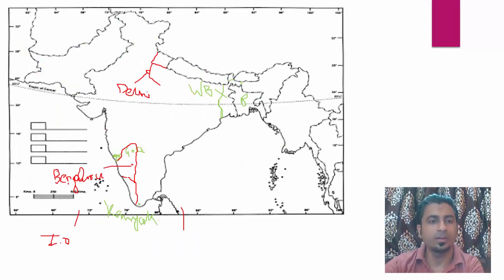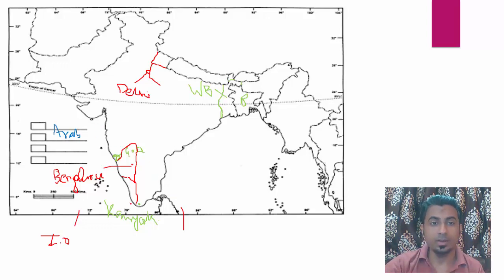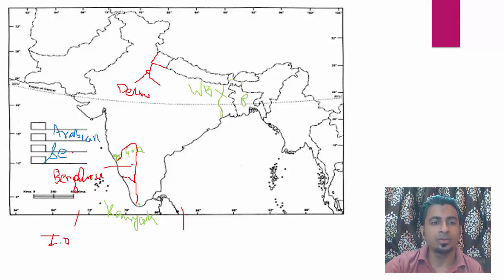Now Arabian Sea is also very easy. Arabian Sea is to the west of India — this is Arabian Sea. Actually Arabian Sea is nothing but an extension of Indian Ocean. The Indian Ocean is here, but due to the Indian Peninsula, the Indian Ocean gets divided into two parts — this becomes Arabian Sea and Bay of Bengal. If there was no land area, this whole area would have been Indian Ocean, but because of the land area we have got two seas.